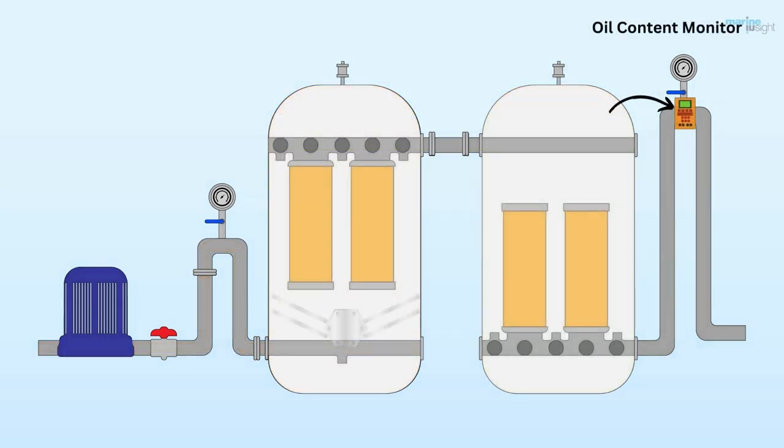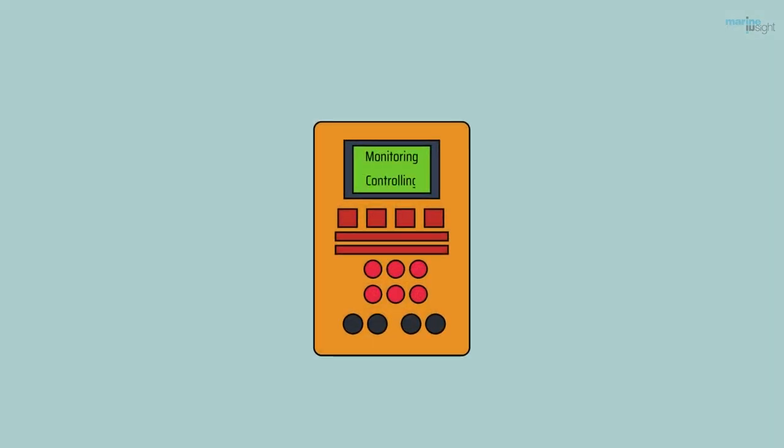Third is the oil content monitor and control unit. This unit functions together in two parts, monitoring and controlling. The ppm of oil is continuously monitored by oil content monitor or OCM. If the ppm is high, it will give an alarm and feed data to the control unit.